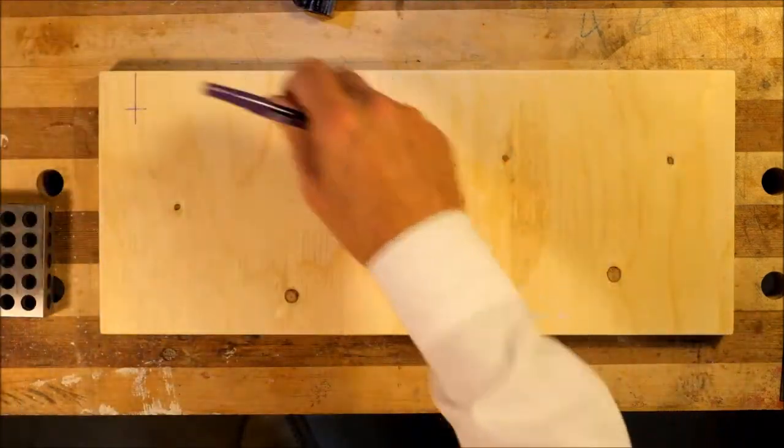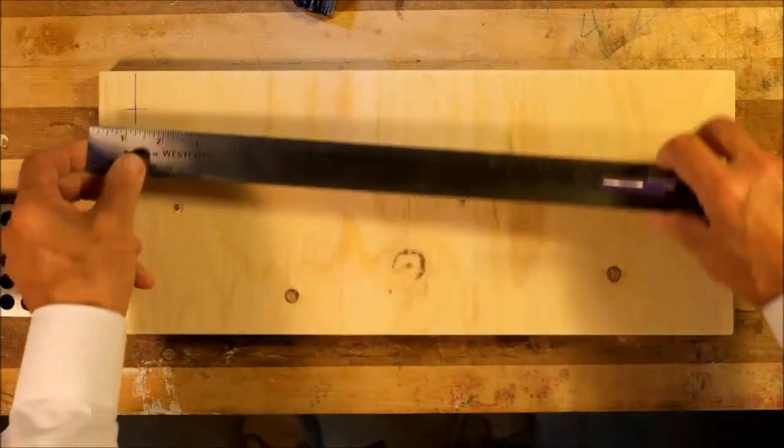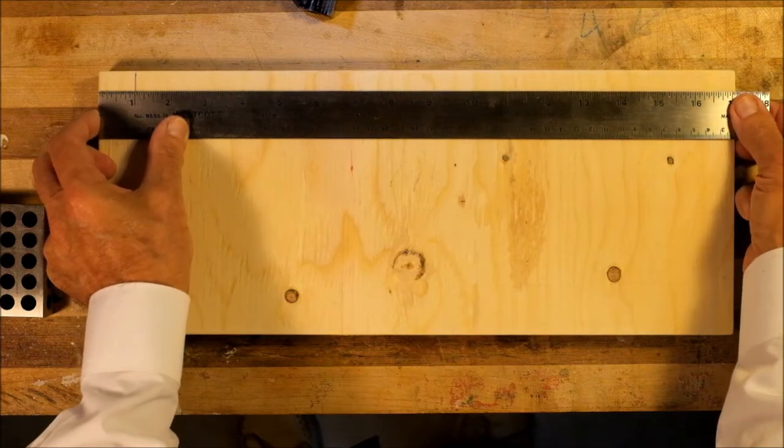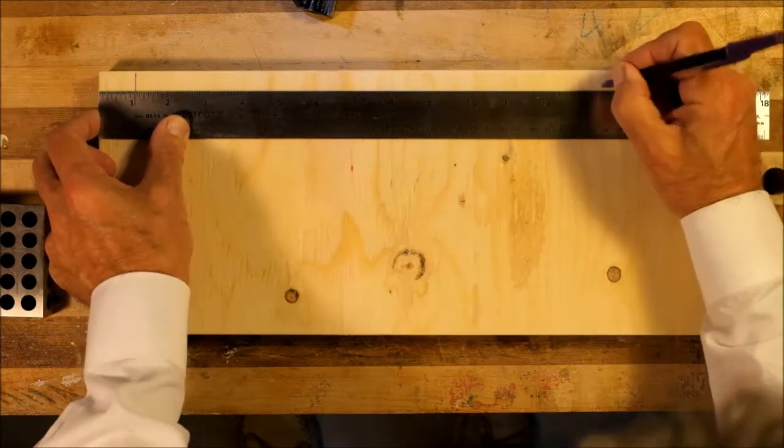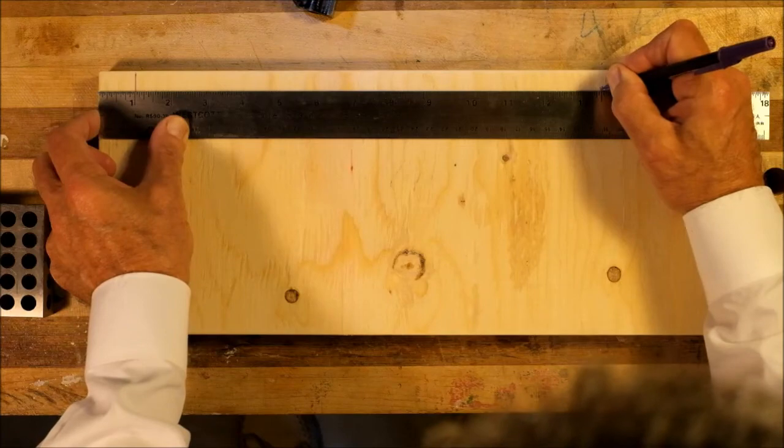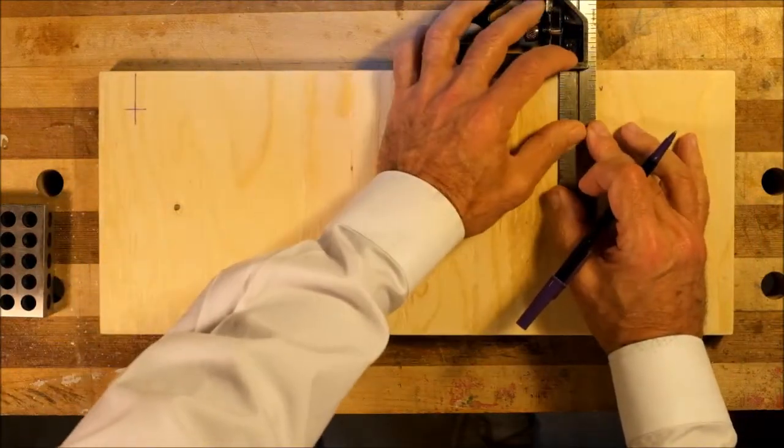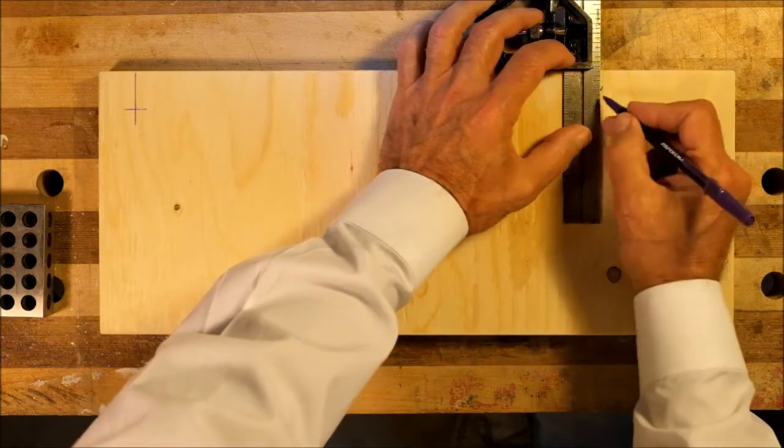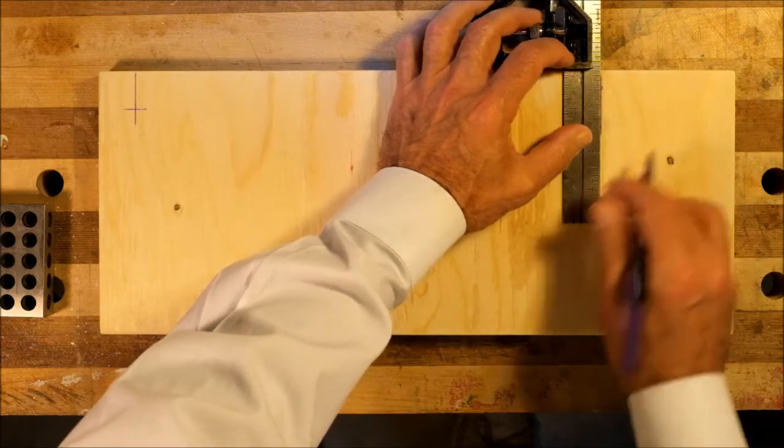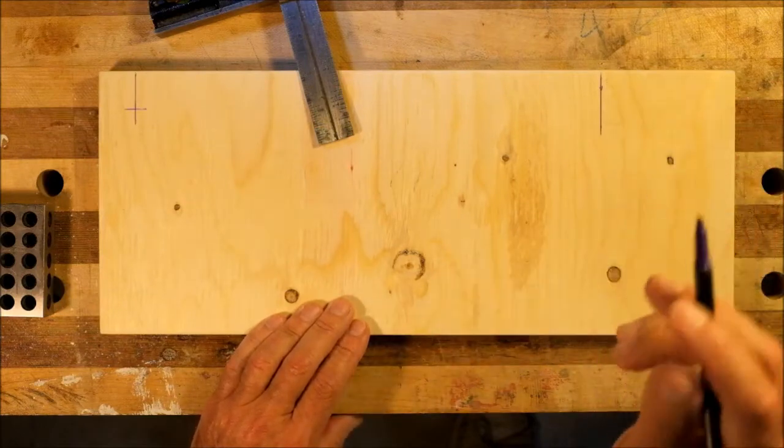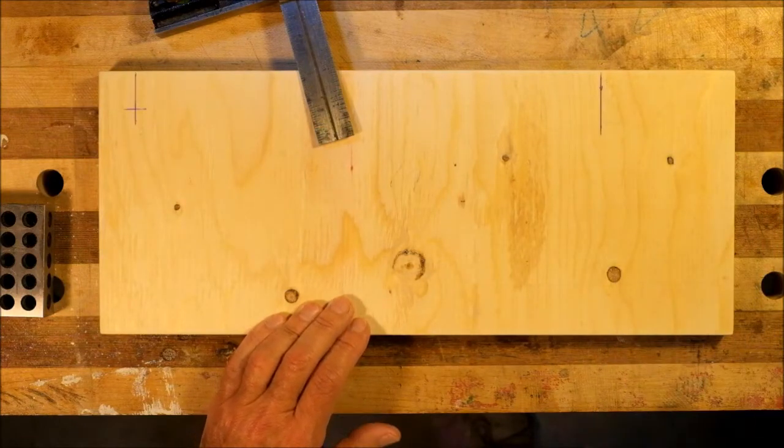The mounting hole on the right is going to be twelve and a half inches from the left hand one or thirteen and a half inches from the edge. So I'll set it along this line someplace, but we're going to set the height a little bit later.